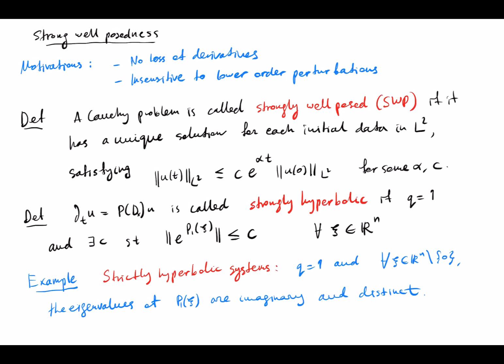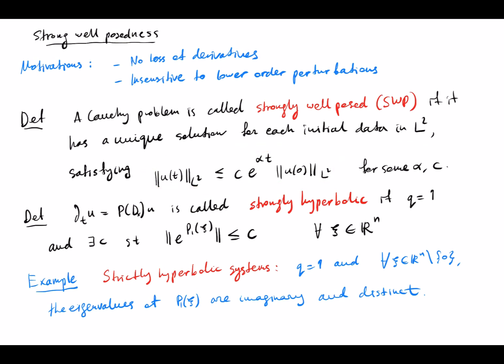A Cauchy problem is called strongly well-posed if it has a unique solution for each initial data in L2 satisfying this estimate. You can see that there are L2 norms on both sides, so it does not lose derivatives, and we also allow exponential growth. As you can see, strong well-posedness is an analytic condition because it has something to do with the solution of a differential equation.